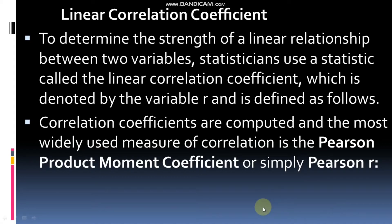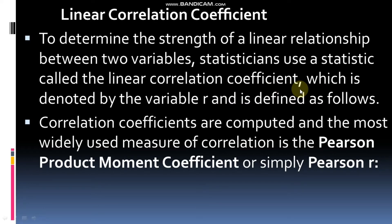Welcome to this mathematics tutorial. Today we will discuss how to solve for the Pearson R. Our topic is the linear correlation coefficient, which is used to determine the strength of a linear relationship between two variables. Statisticians use a statistic called the linear correlation coefficient, denoted by R. The most widely used measure of correlation is the Pearson product-moment correlation, or Pearson R.